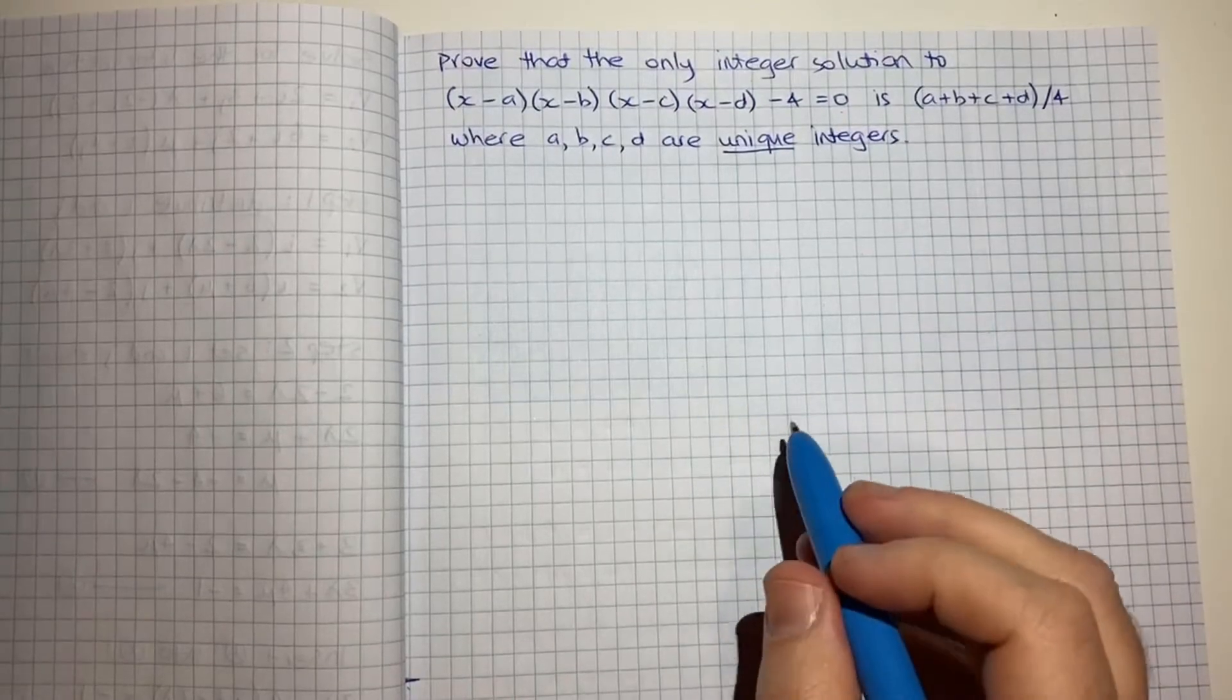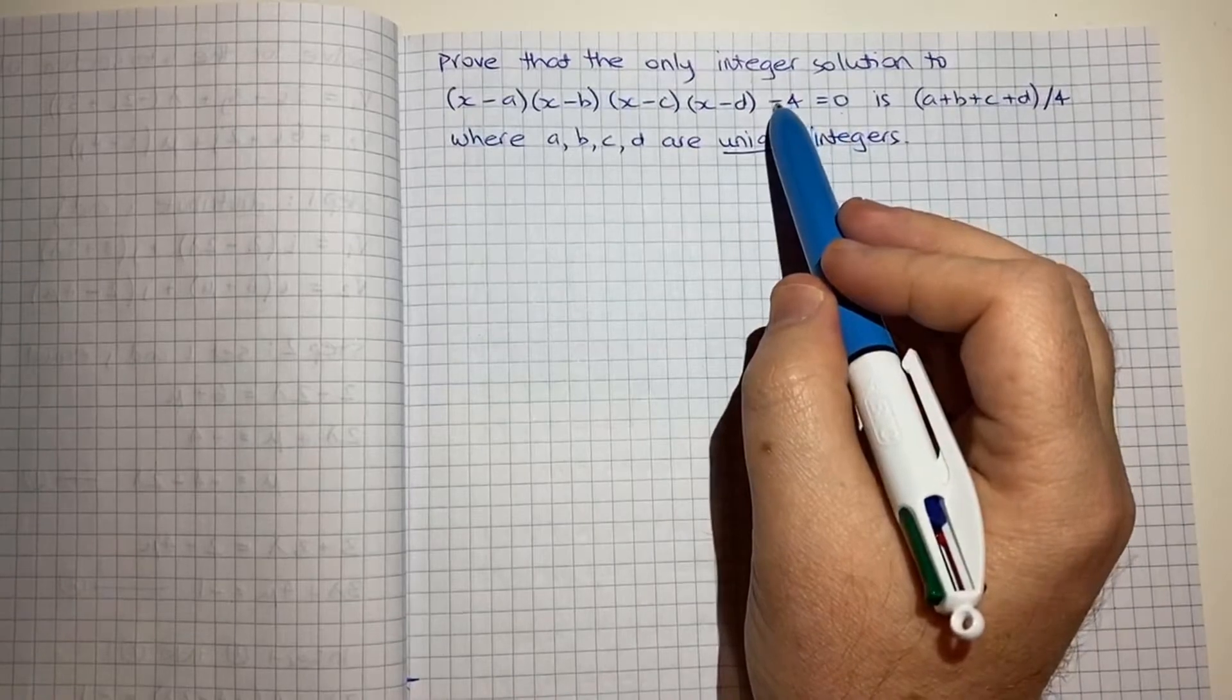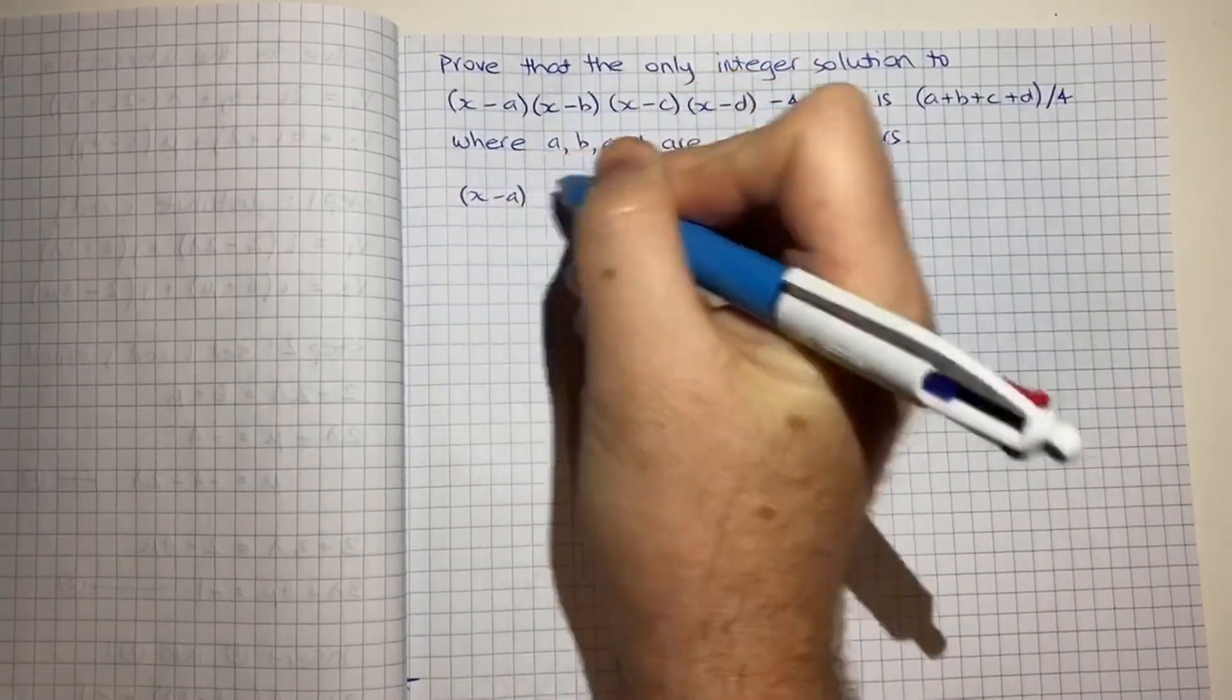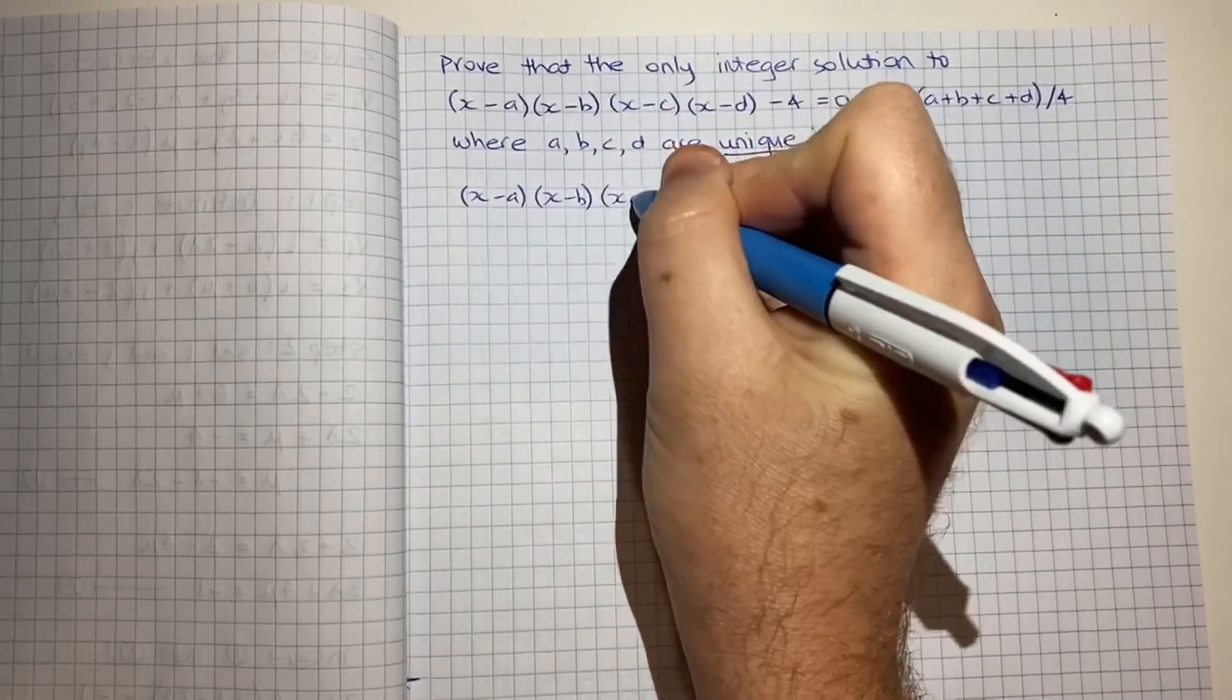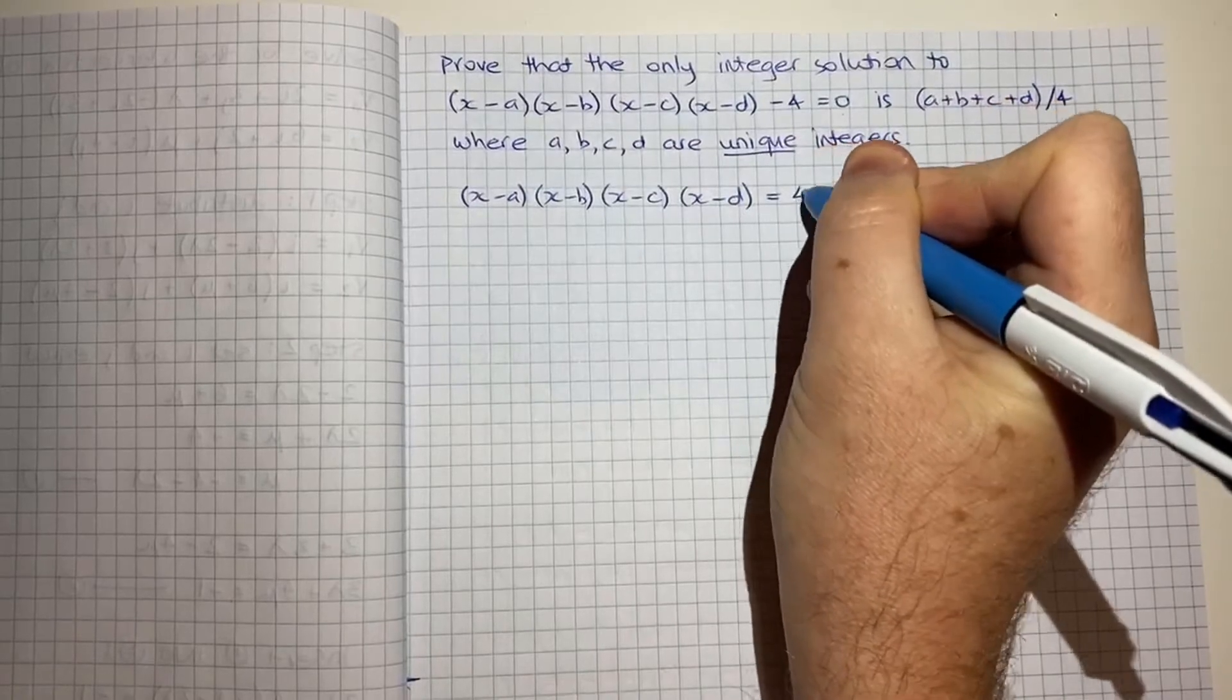So the first step I would take to deal with this question is I'd bring the 4 over. So we'll get (x-a)(x-b)(x-c)(x-d) = 4.